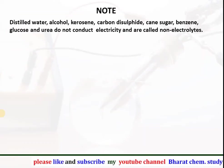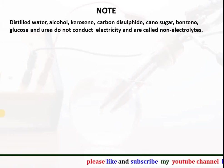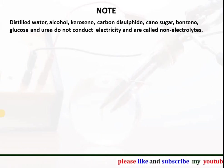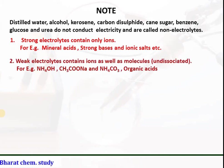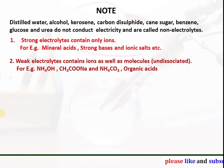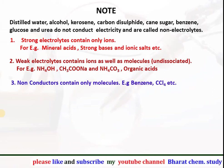Note: distilled water, alcohol, kerosene, carbon disulfide, sugar, benzene, glucose and urea do not conduct electricity and are called non-electrolytes, because they do not conduct electricity even in their molten form or aqueous solution. Strong electrolytes contain only ions — for example mineral acids, strong bases and ionic salts in their molten or aqueous forms. Weak electrolytes contain ions as well as molecules because they do not undergo complete dissociation — for example ammonium hydroxide, sodium acetate, ammonium carbonate, organic acids, etc. Non-conductors contain only molecules — for example benzene, CCl4, carbon disulfide, glucose, urea, etc.